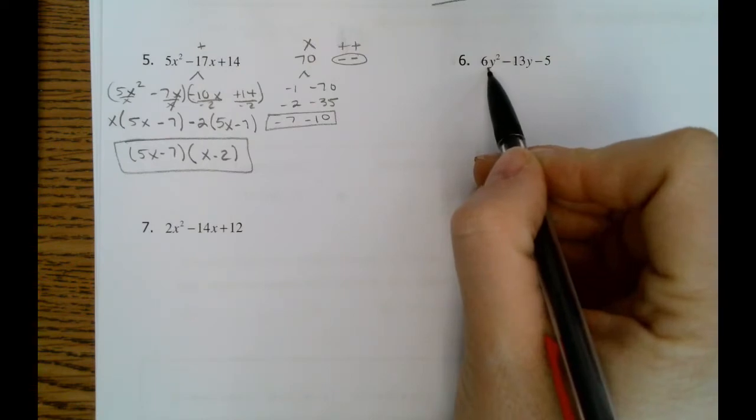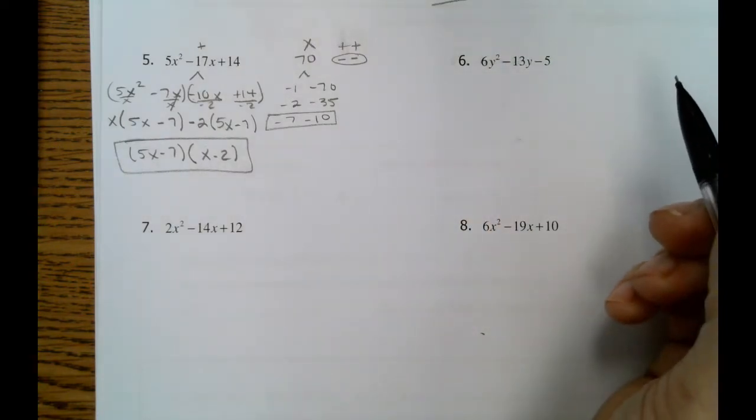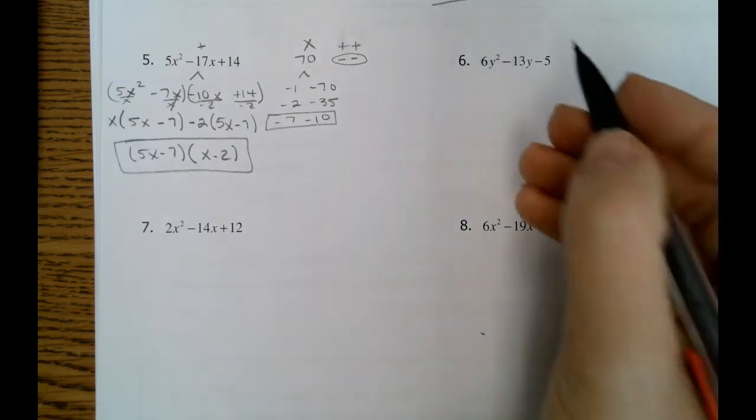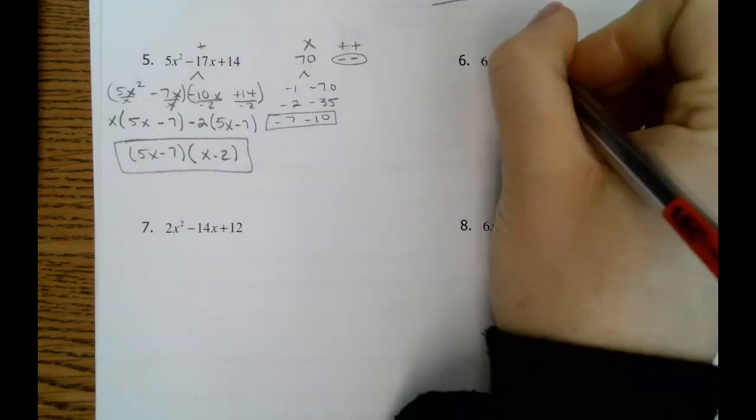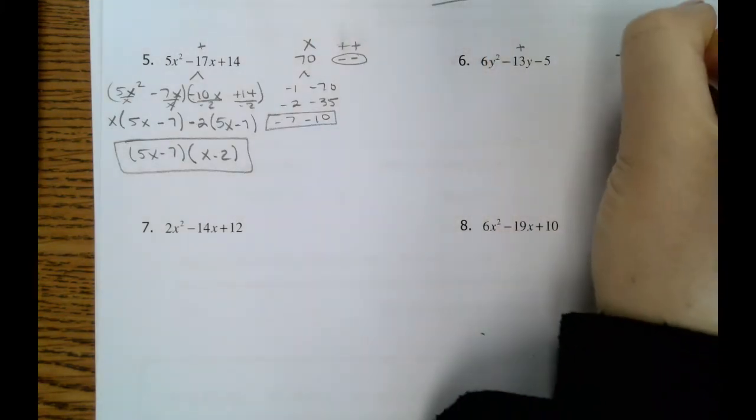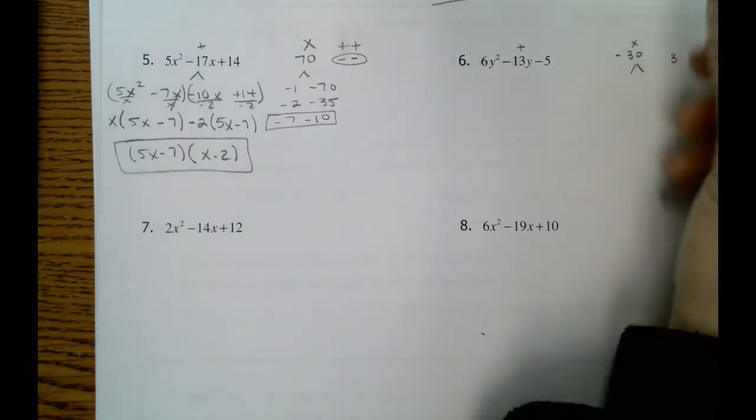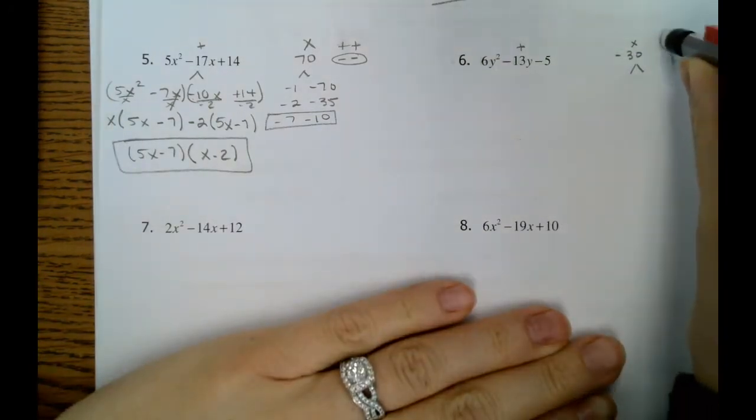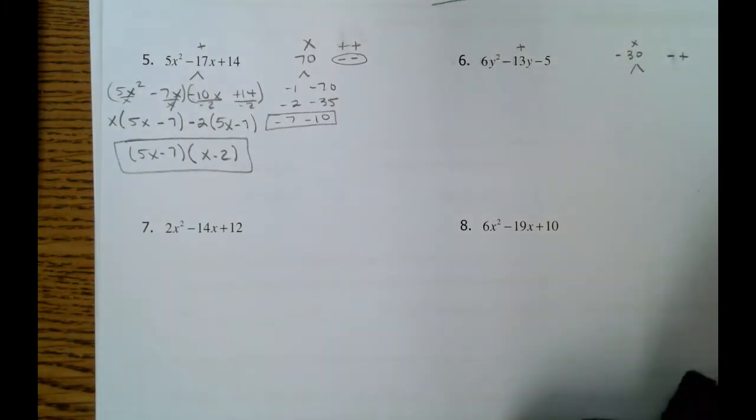Number 6. We'll have 6y squared, negative 3, 2y, and 5. Those don't have a GCF other than 1. So we're good to go. 6 times negative 5 is negative 30. So we want to add to negative 13. Multiply to negative 30.